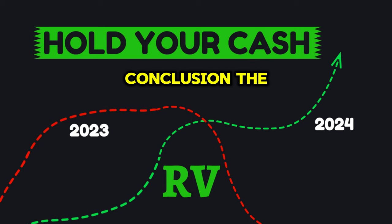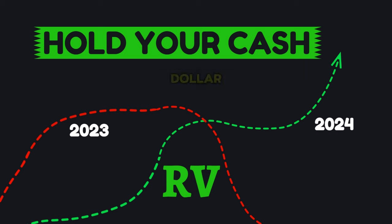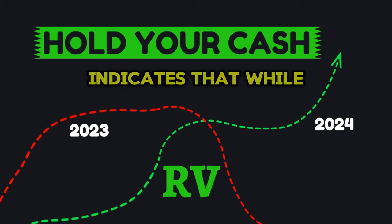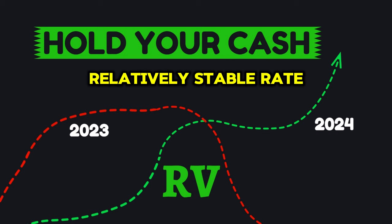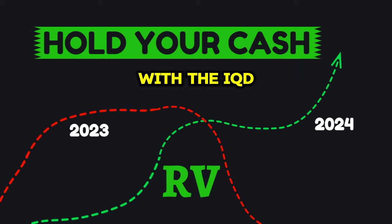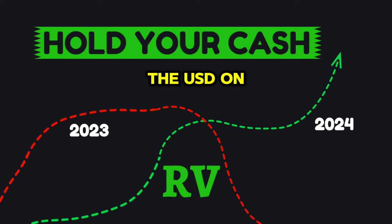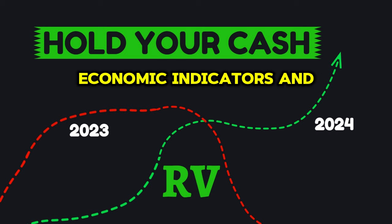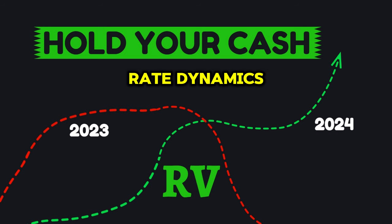Conclusion: The comparison of the exchange rate between the Iraqi Dinar and the U.S. Dollar for 2023 and 2024 indicates that while 2023 saw a relatively stable rate, 2024 experienced more volatility, with the IQD trading at a slightly higher rate against the USD on average. Economic indicators and geopolitical events are likely factors influencing the exchange rate dynamics.